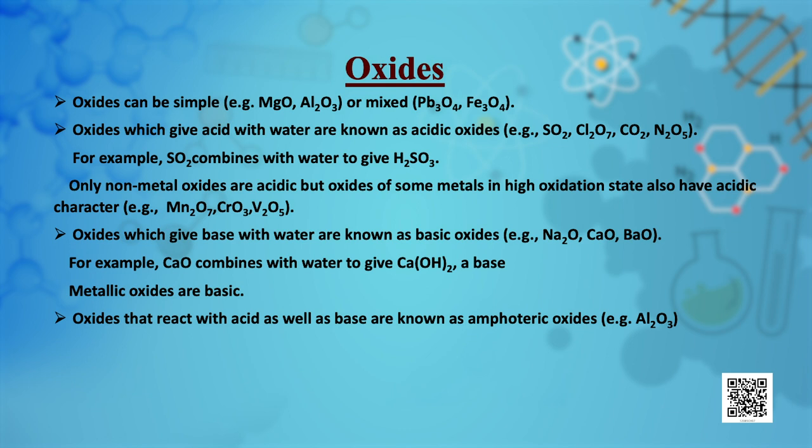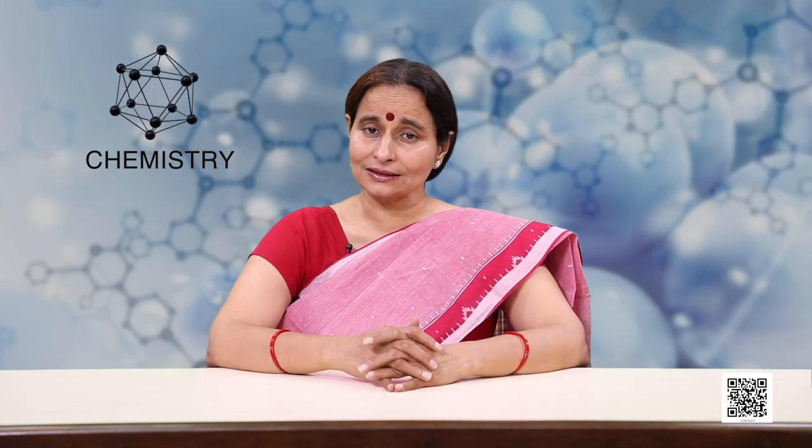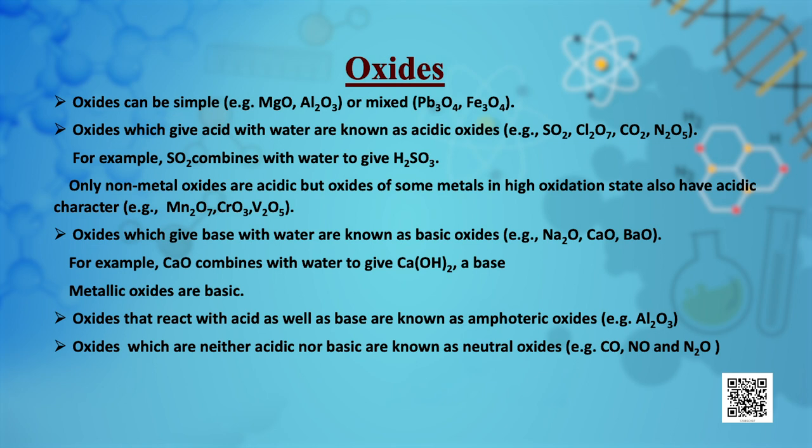For example, aluminium oxide reacts with both acids and alkalis. There are some oxides which are neither acidic nor basic; such oxides are known as neutral oxides. Examples of neutral oxides are carbon monoxide, nitrous oxide and nitric oxide.